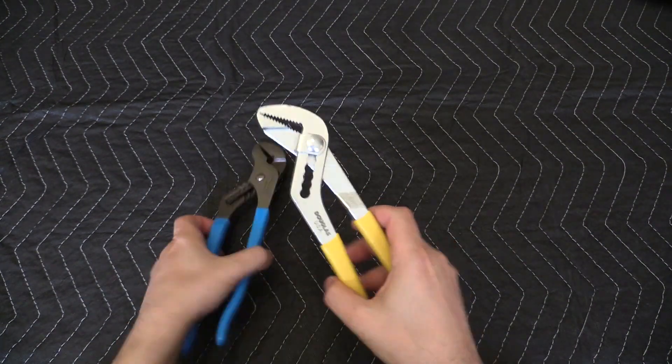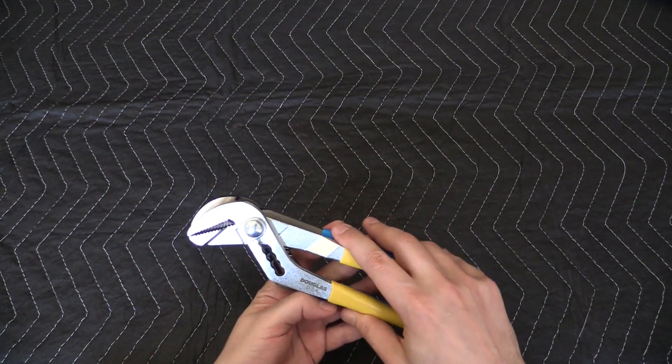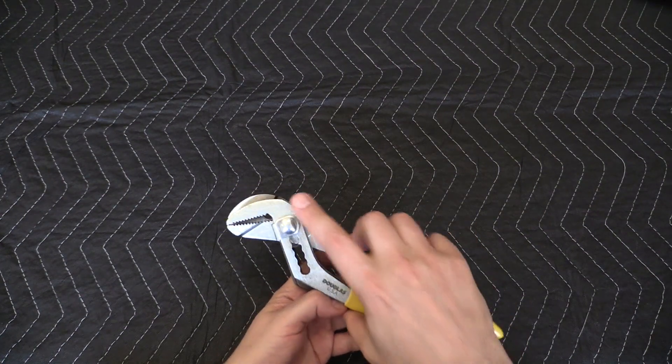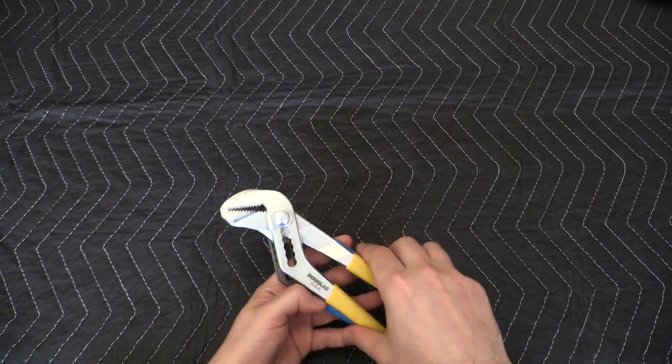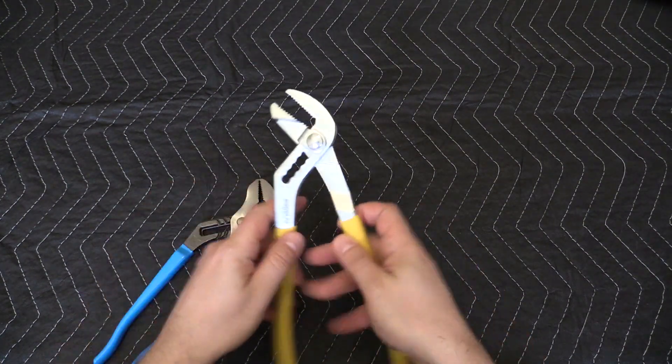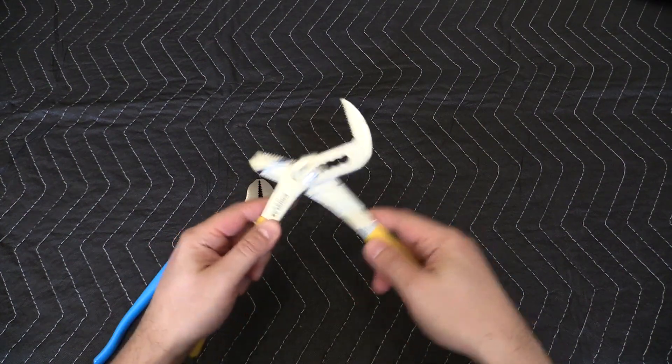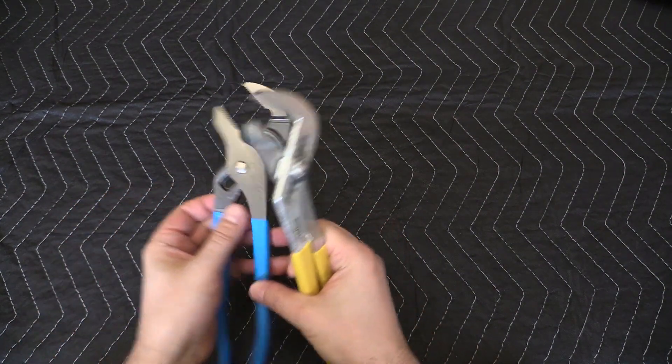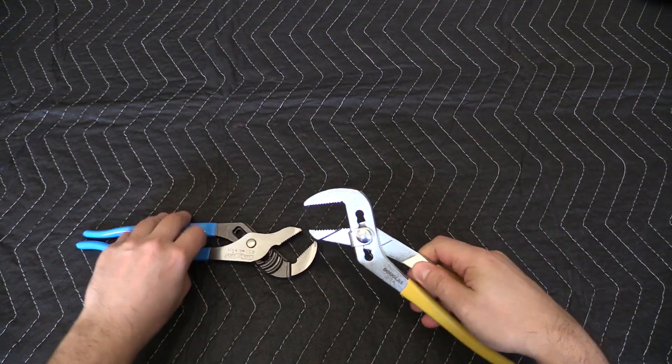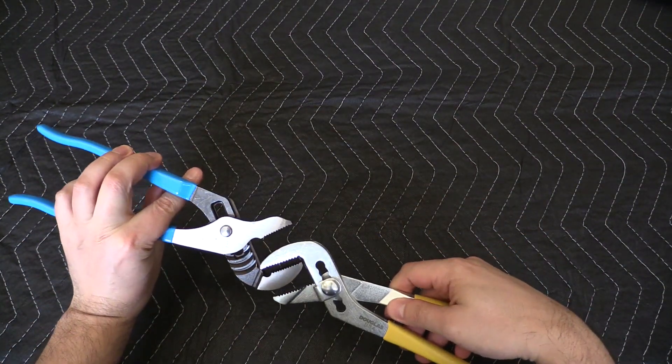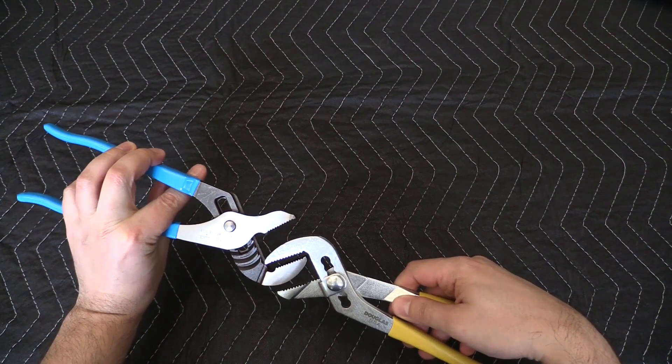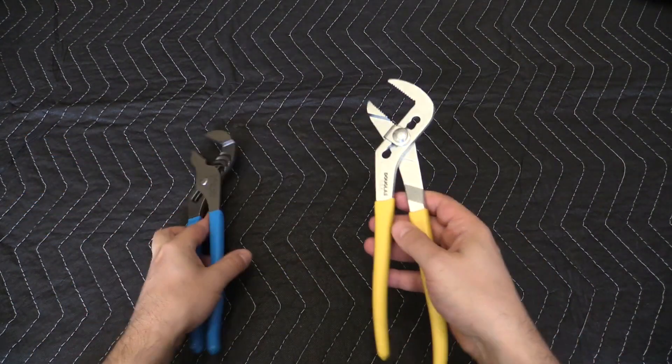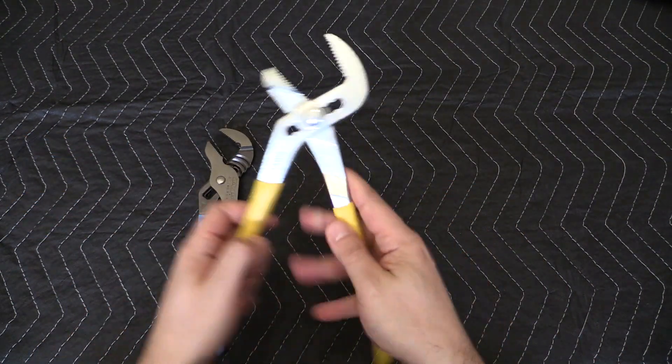In terms of the overall design you can see that the jaws are a little bit slimmer on the Douglas and also the jaws are a little bit longer so I like that, but as you just saw they can be a little finicky to open and close.